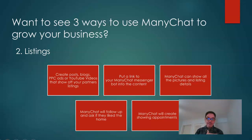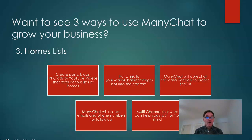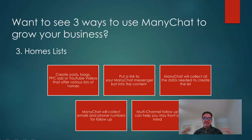You can create posts, blogs, or pay-per-click ads to show off the listing, put the link to the bot right in the post, and then ManyChat shows all the pictures and listing details. I've even got a listing bot that follows up and asks if they liked the home — if they did, it can set up showing appointments. If they didn't like the home, it can move to the next bot and ask: 'Would it be okay if I created a custom list of homes based on your search parameters?' Then it asks about bedrooms, baths, and all of that gets collected into the bot.